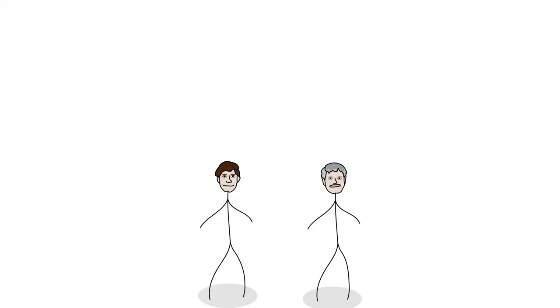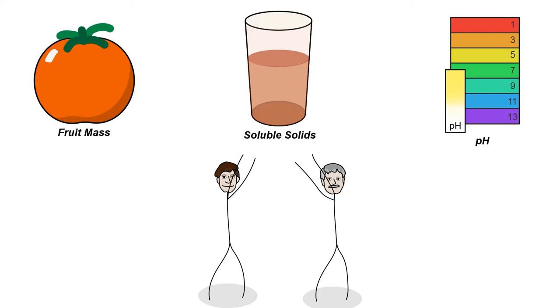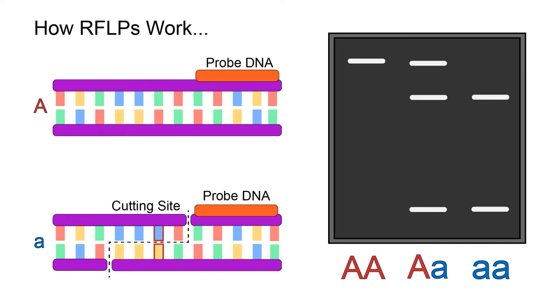In 1988, Patterson and Lander sought to answer this question for three complex traits in tomatoes: fruit mass, pH, and soluble solid concentration. Their approach involved positioning quantitative trait loci, or QTLs, within the genome by their association with genetic markers.